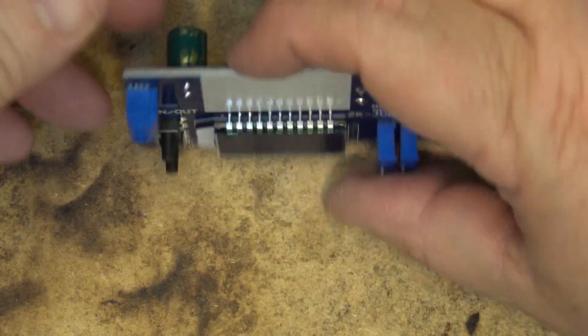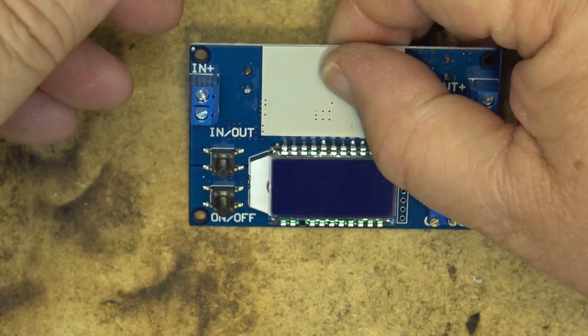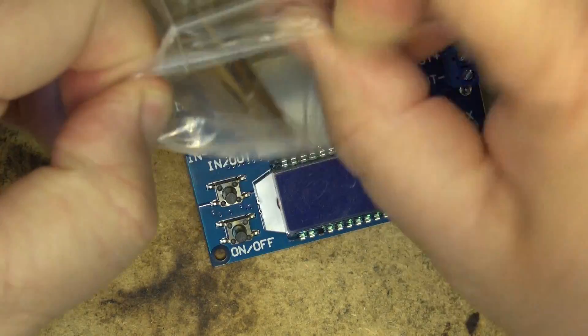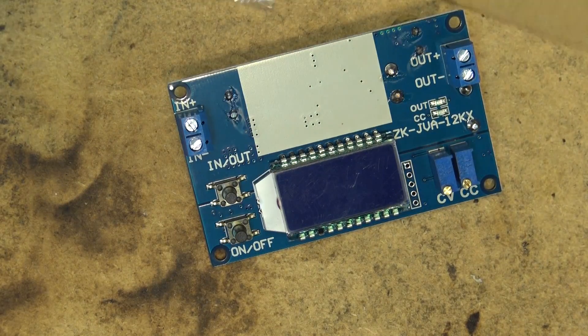We'll assemble the case and we'll put the heat sink onto it here. The heat sink just goes onto the side of the board here and we'll put the cabinet together and then we'll test it and see how this thing performs.